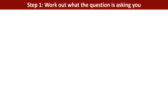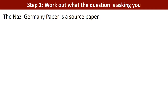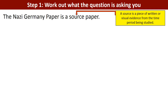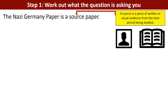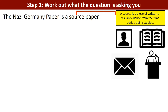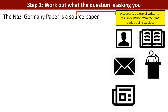The first step of any GCSE history question is to actually work out what the question is asking you, to have a proper look at it and break it down into its component parts. The Nazi Germany paper is a source paper, which means you will be given pieces of written or visual evidence from the time period — from the 1930s through to 1945 at the end of the Second World War — and you will be asked to do different things with it. Types of sources you might be given include a portrait or picture, a diary, a letter, a speech which has been transcribed, a newspaper article, or reports and statistics from that time.